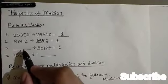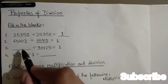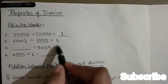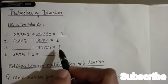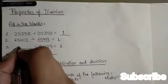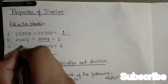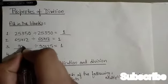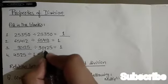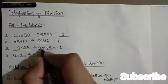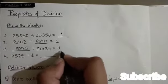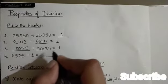Whenever we divide a non-zero number by itself, the quotient is always 1. So we will divide 90,125 by 90,125 to get quotient 1.